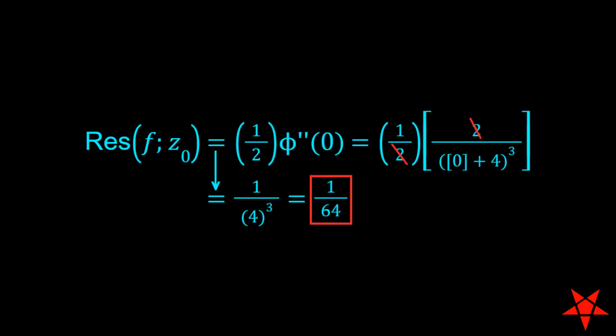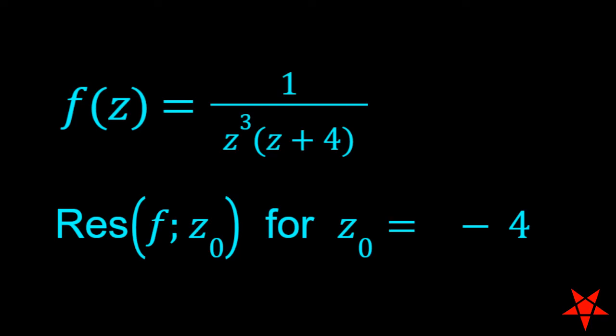The simple pole at z naught equals minus 4, along with its corresponding residue, almost feels like a waste of time at this point, but I will throw it up on the screen just for love of the game. I'm not going to bother with the derivatives that I calculated for the previous value of z naught. If anyone has questions about the nature of the 0 at z naught equals minus 4, then hit me up in the doobly-doo.